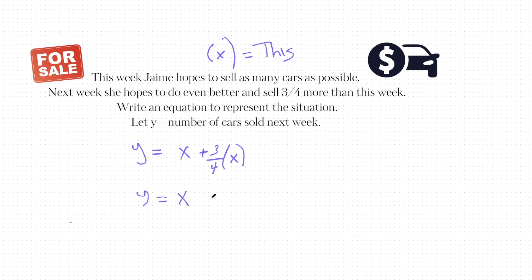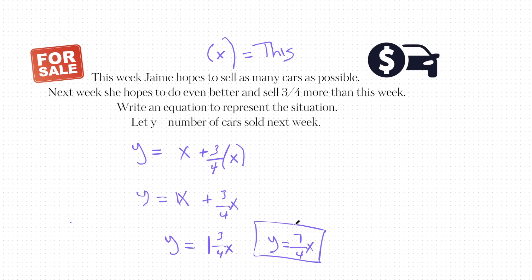Jamie wants to sell three quarters more than this week, so that's plus three quarters times x. Now simplifying: y equals x plus three fourths x. Since x is really one x, adding one and three quarters gives us one and three quarters x, which as an improper fraction is y equals seven quarters x. The first value represents what happened this week, and the second value shows what happens next week based on this week's value x. Good luck!